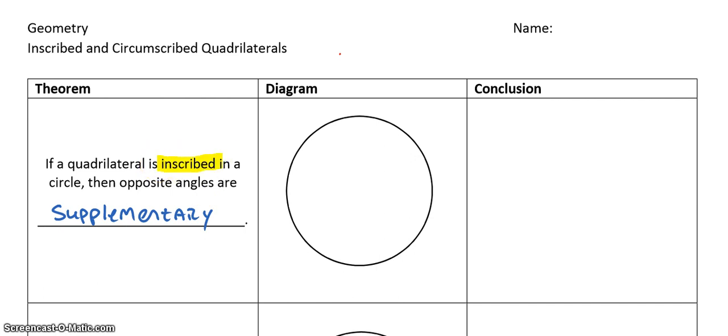Inscribed means that it's drawn inside of a circle. So, if we're talking about a quadrilateral, it means that it's inside of a circle and the vertices of the quadrilateral are hitting the circle. So, something like that. Any quadrilateral. It could be a parallelogram, a rectangle, any of the ones we studied. Alright, so that's what inscribed means, it's drawn inside of a circle.